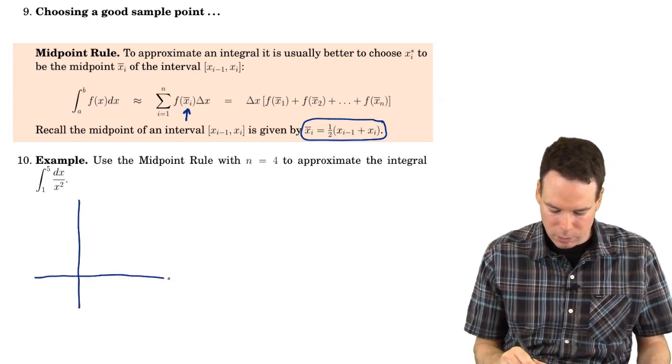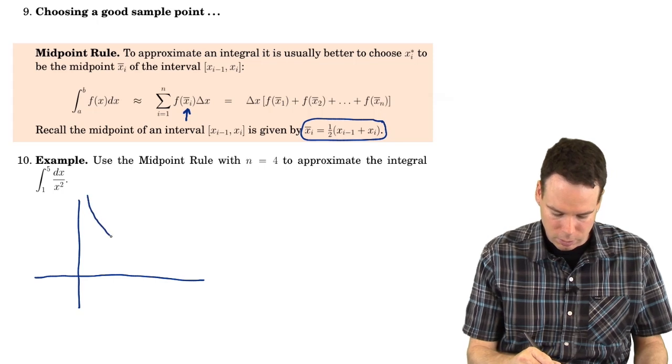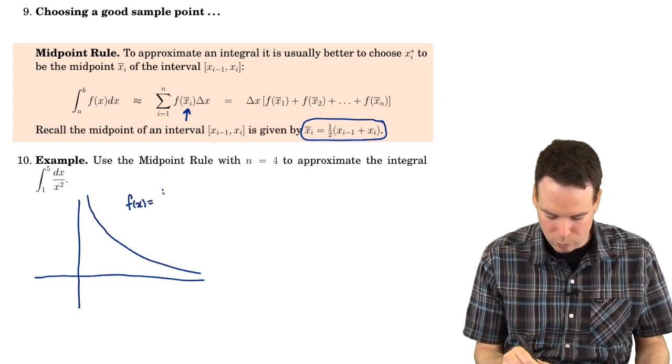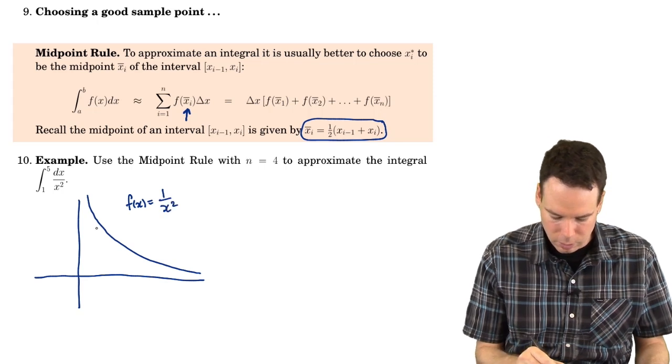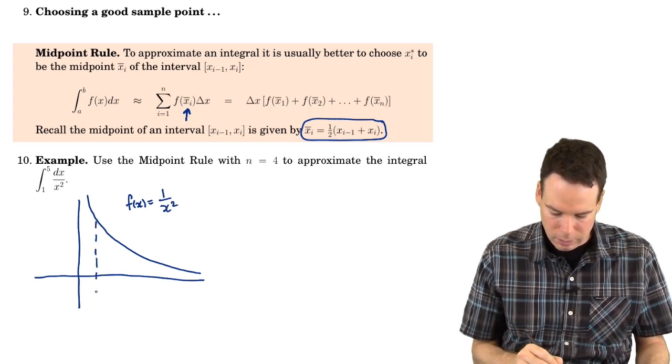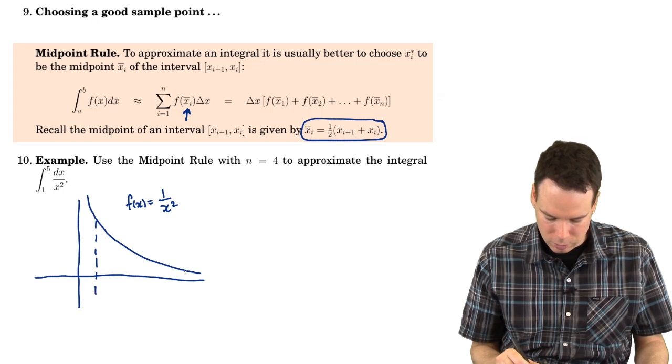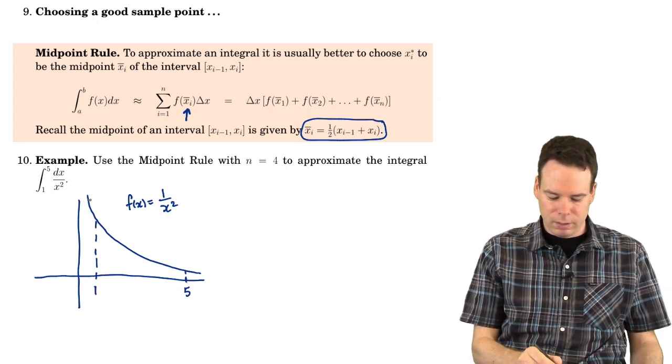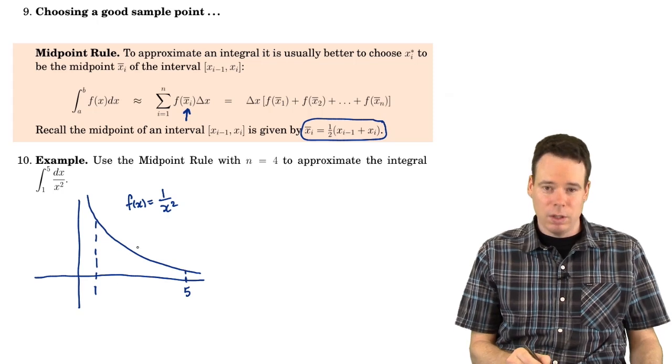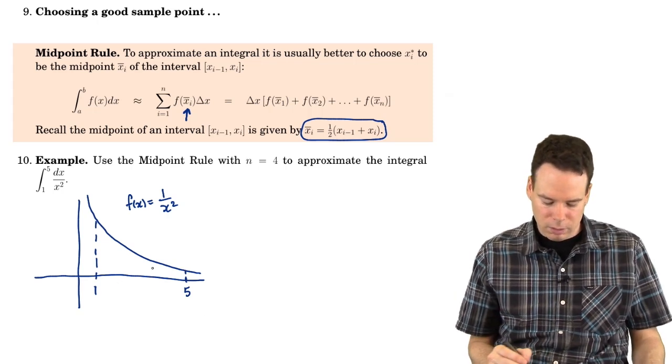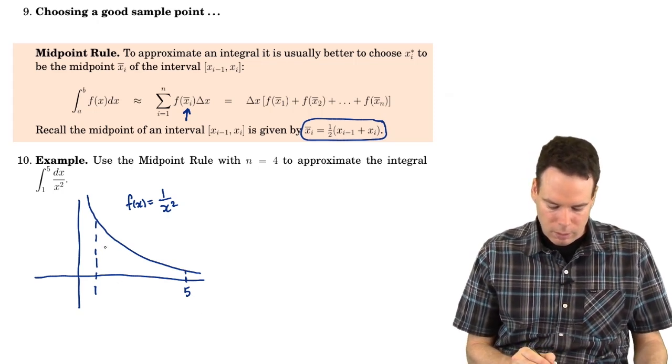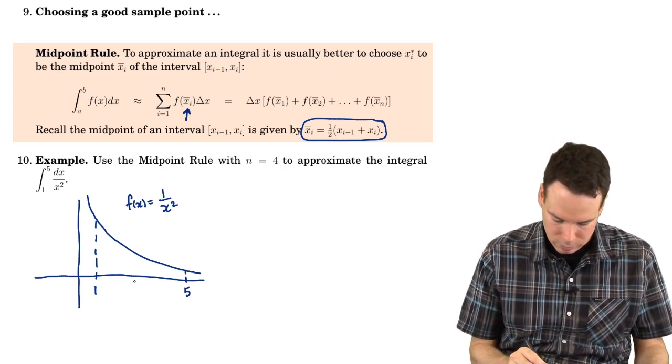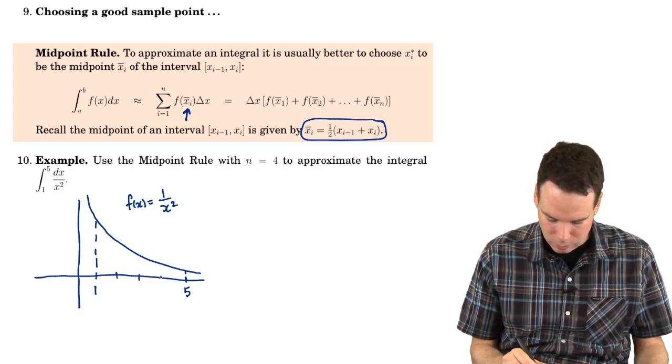Here is our curve. This is f of x equals 1 over x squared. We want to estimate the integral or approximate the integral from 1 to 5. In this case the function is always positive so the integral is exactly equal to the area under the curve. We want to use four slices. So let's slice it up into four pieces.